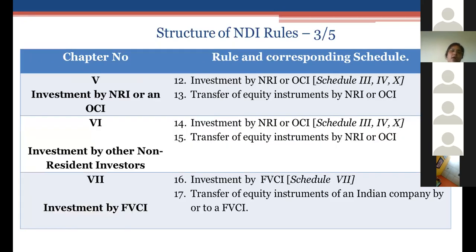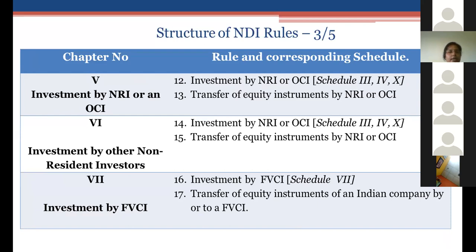Chapter 5 deals with investment by NRIs and OCI cardholders — Overseas Citizens of India under the Citizenship Act. They can invest in Indian companies under a specific schedule prescribing the limit and manner of investment. There is also a chapter for investment by other non-resident investors. Chapter 6 covers Foreign Venture Capital Investors (FVCIs), registered with SEBI, which are permitted to invest in unlisted entities operating in specified sectors such as biotechnology, nanotechnology, dairy processing, and agriculture, subject to Schedule 7 conditions.